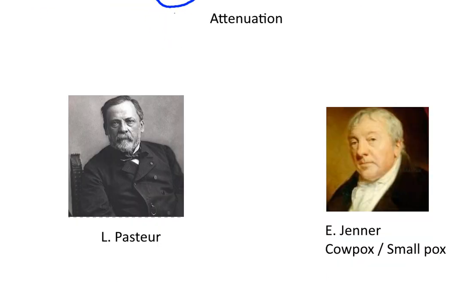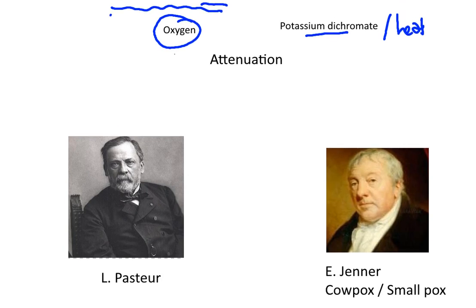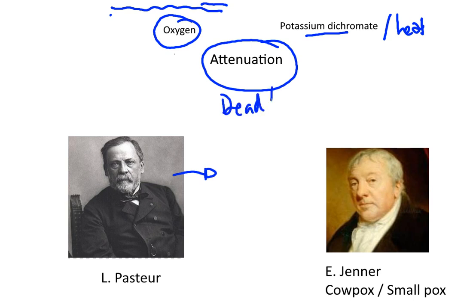Pasteur decided that he would call the weakened form of the bacterium — which is called attenuation — the idea of injecting dead or weak versions of the disease-causing organism, of the pathogen, he would call this technique vaccination, and that they were vaccines.